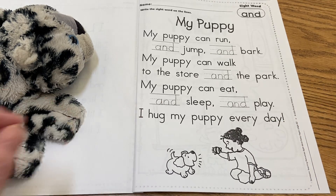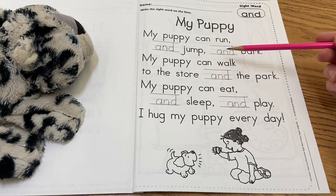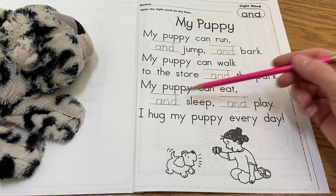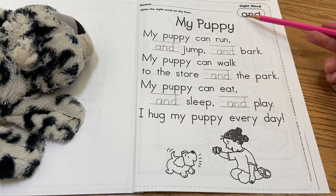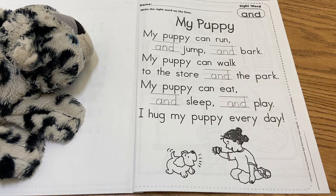So I'm going to let you pause the video right now while you finish writing 'and.' You're going to trace it once and write it four additional times — A, N, D. You're going to write it in each one of those spaces. You can pause the video right now if you need time.